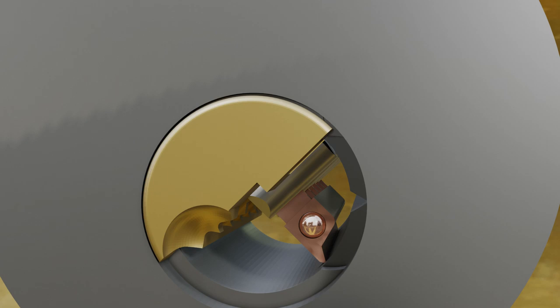And if you remember my first video on how locks work, preventing core rotation is what a lock is all about. So the sidebar is providing our secondary locking mechanism, in addition to the pins like normal.